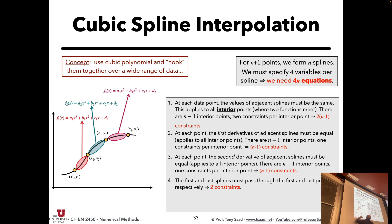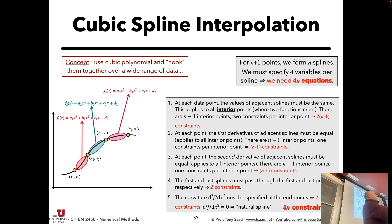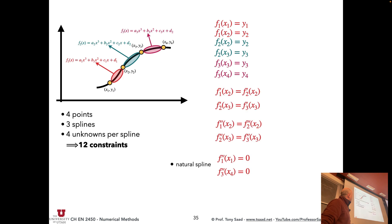So fixing the second derivatives at the first and last data points — we don't know those, so we just set them to zero. That's all you need to know about building splines. I'm not going to ask you to write code for splines — it's tremendously annoying. But you need to understand how they're built. If I ask on the homework or exam to list the conditions to build the spline, you need to be able to do that.